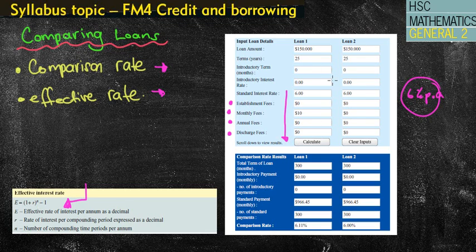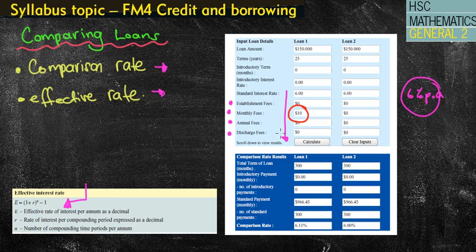So what a comparison rate does is look at the interest rate for the loan and add in all the extra fees you might pay. If you look at these two home loans, they're pretty much identical — both $150,000, both over 25 years, both at 6% per annum. However, the one difference is that the first one has a monthly fee of $10, which means $120 a year over 25 years — a significant amount of money. So obviously, you'd automatically suggest that loan two is going to be better.